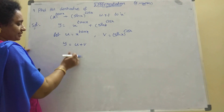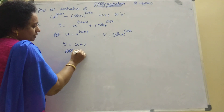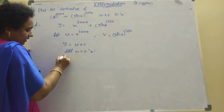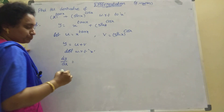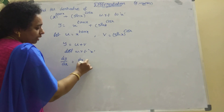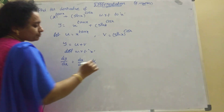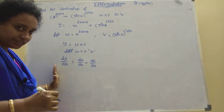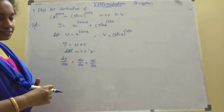Now differentiation with respect to x on both sides. d by dx of y equal to du by dx plus dv by dx. So dy by dx equal to du by dx plus dv by dx.